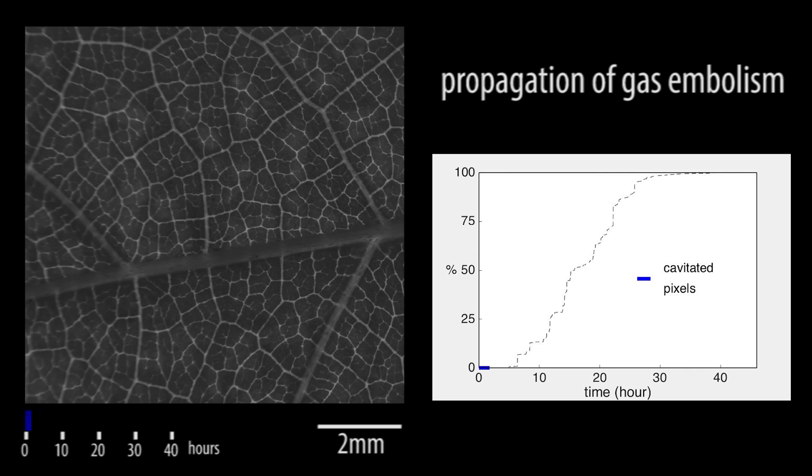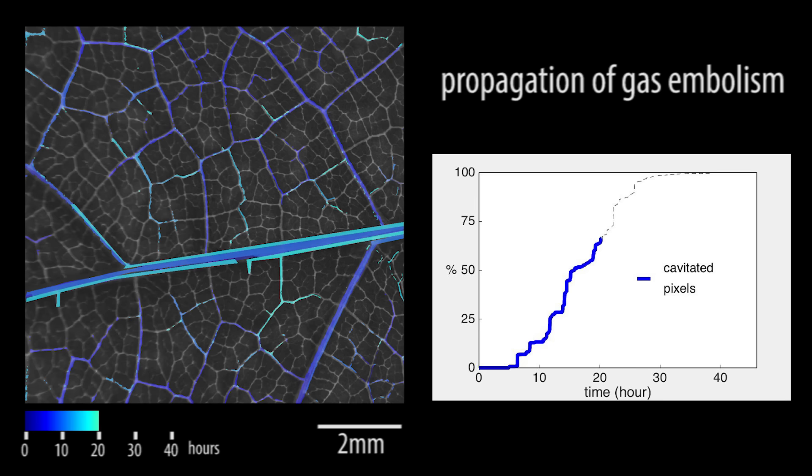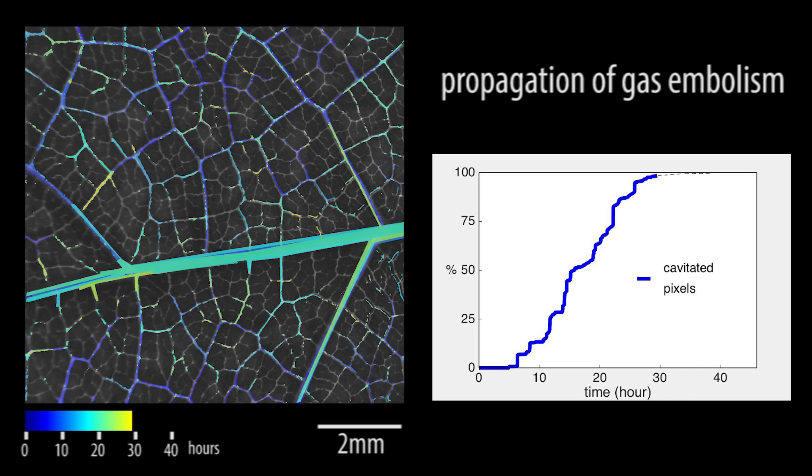Simple image analysis resolved the spatial and temporal propagation of embolism throughout the leaf. The different colors represent the time of embolism appearance, as shown in the timeline. The cumulative embolized pixels are presented by the blue curve.